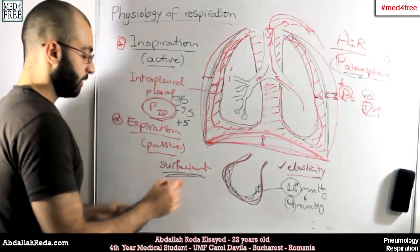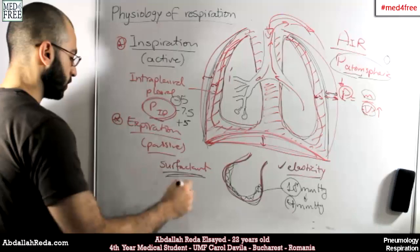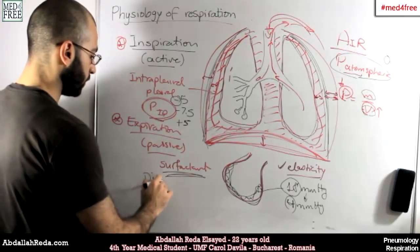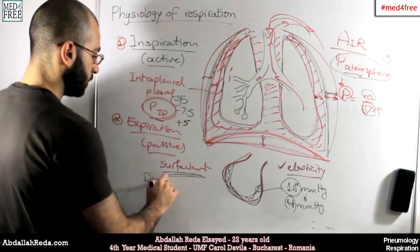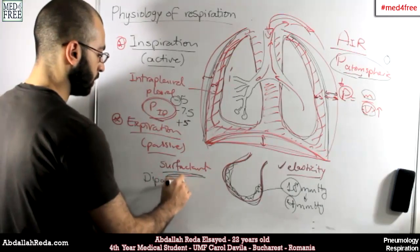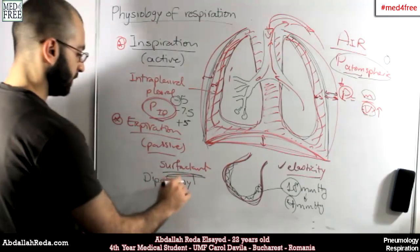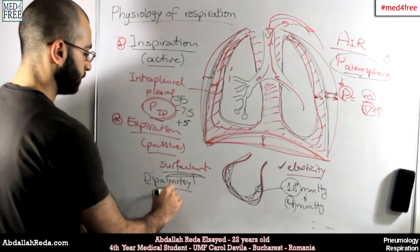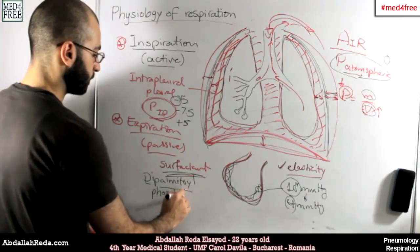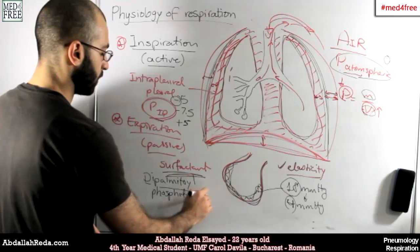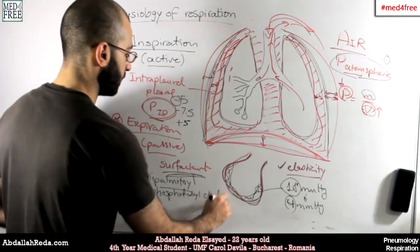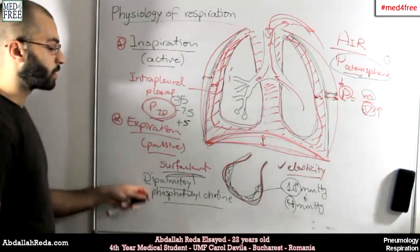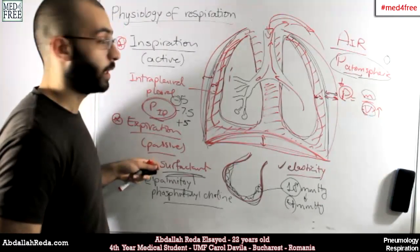The surfactant in the alveoli in the human body is called — just for you to know — Dipalmitoyl Phosphatidylcholine. That is what the surfactant in the alveoli is called.